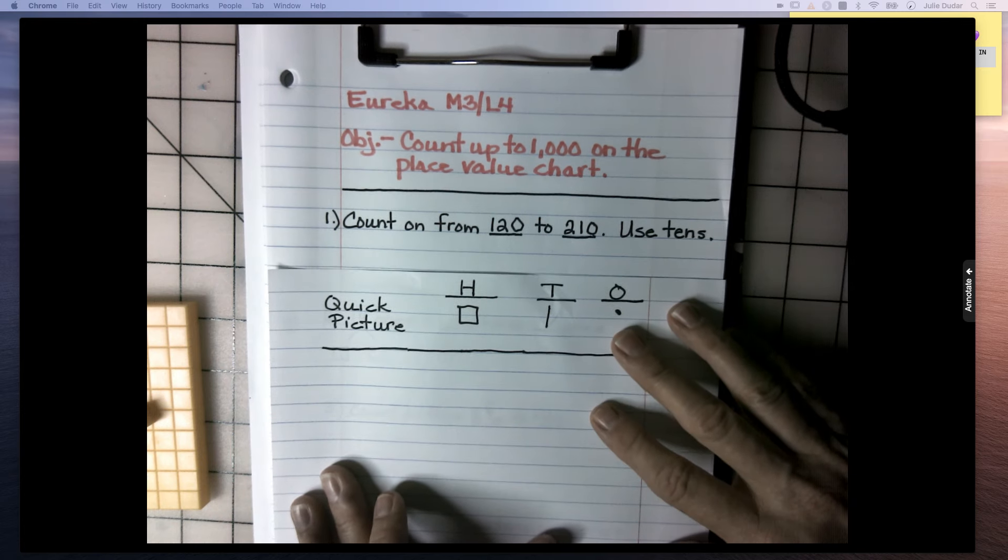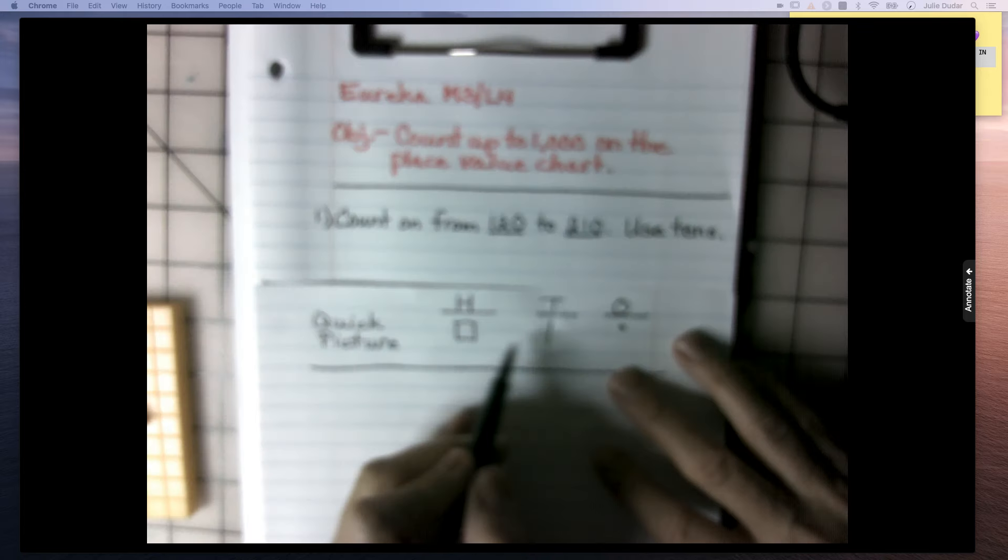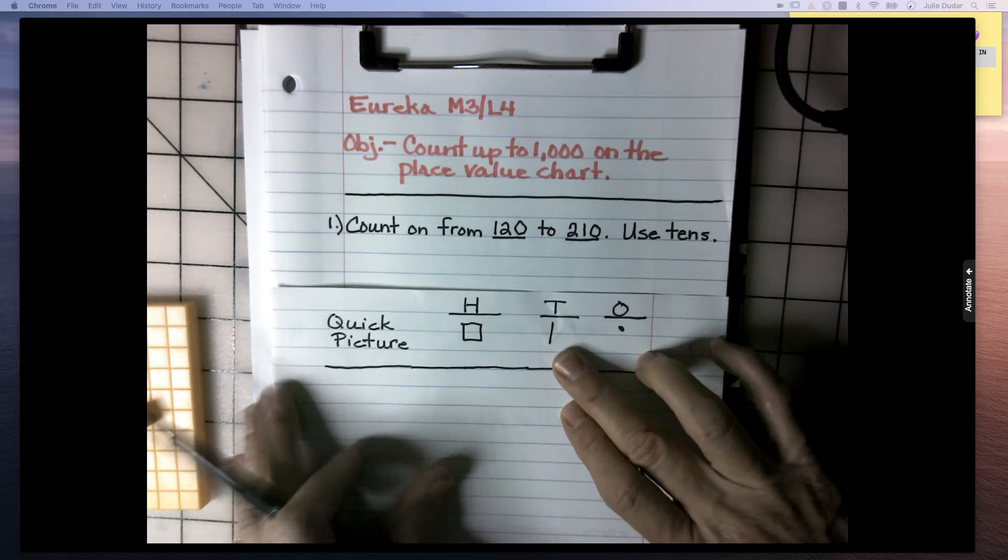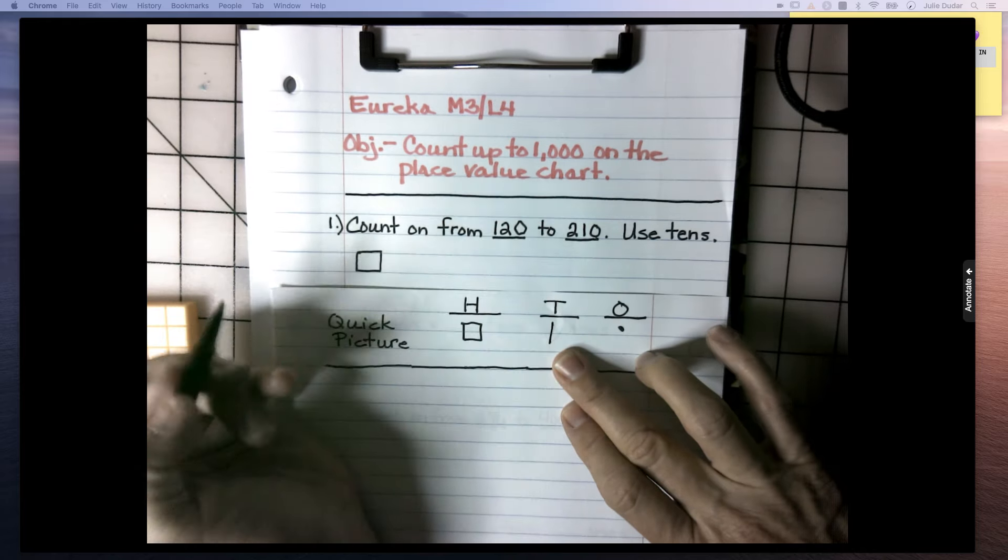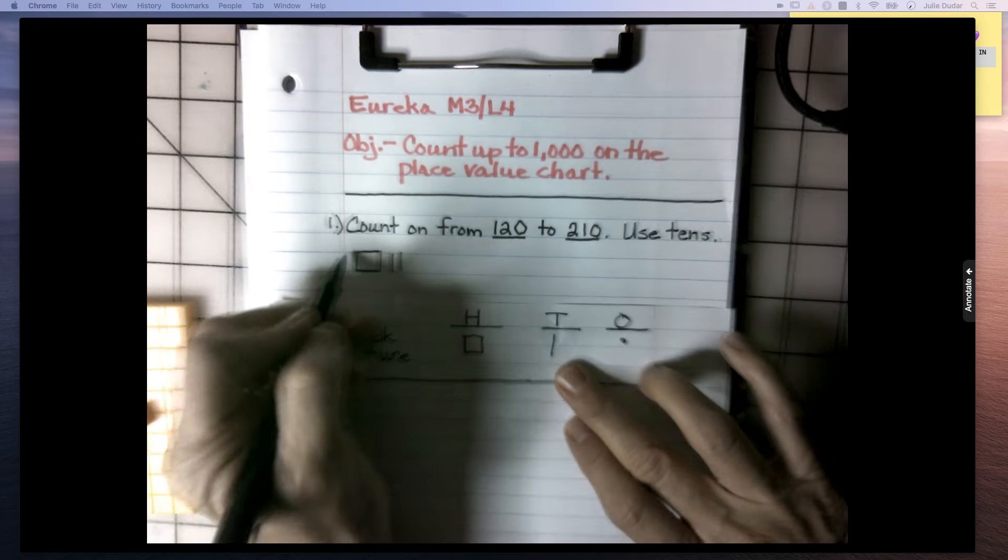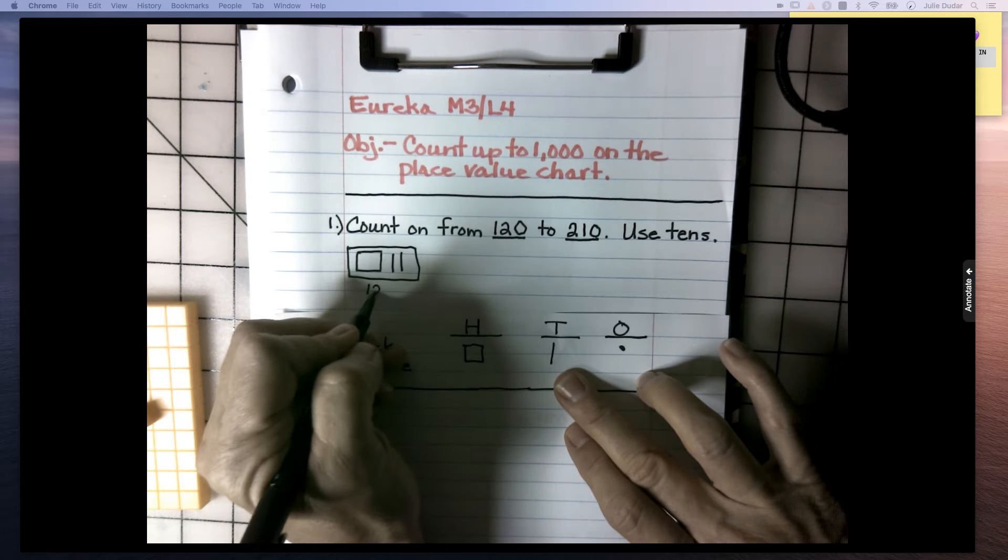Count on from 120 to 210. We're going to use tens only, which means we're only using the sticks. So I want to draw 120 first. So I know that this is 100, and 20 is 110, 120. And I'm going to label it and box it like we were doing in our math workbook.